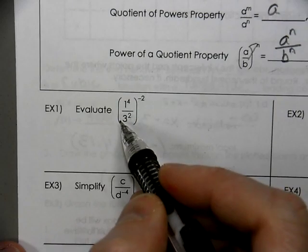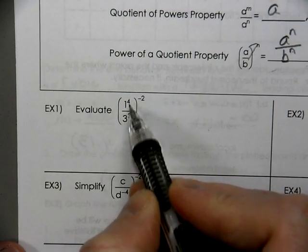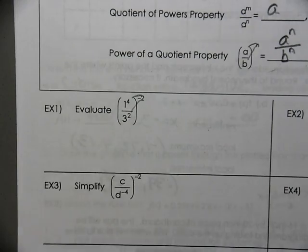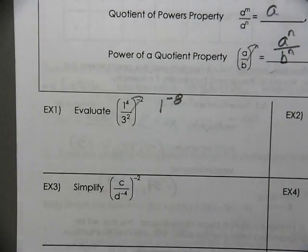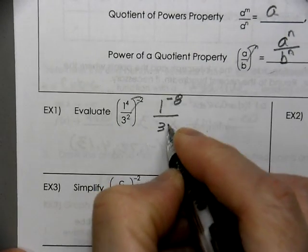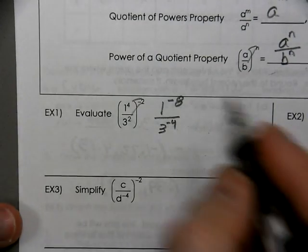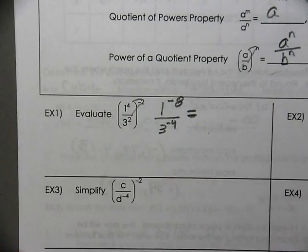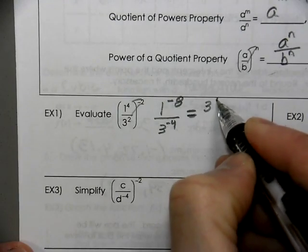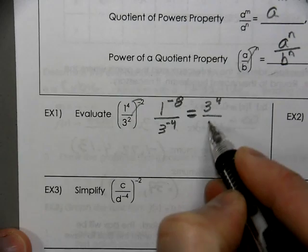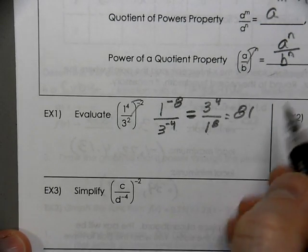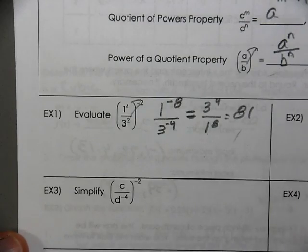There are a couple of different ways we could think about this. Notice the bases are different, so we cannot subtract exponents, but we can distribute our exponent into it. This gives us 1 to the negative eighth power and 3 to the negative fourth power. The negative power tells us to put it into the opposite side — like a negative attitude that needs to move to positive. So 3 to the fourth is 81, over 1 to the eighth, which is 1. So the answer is just 81.